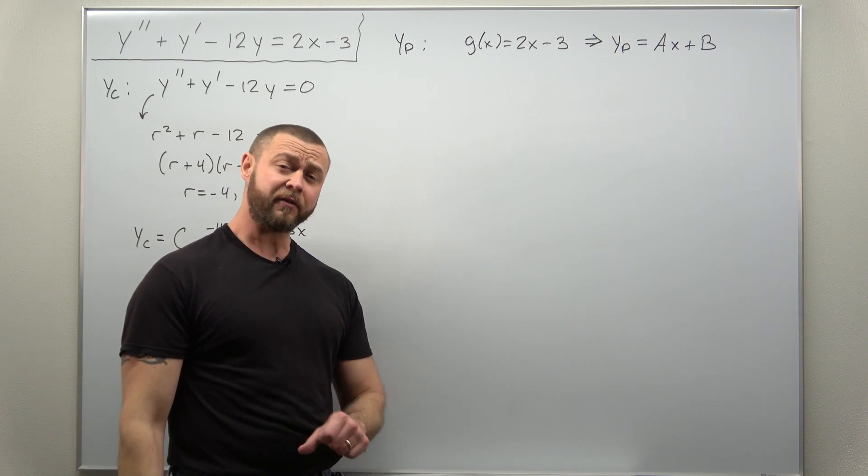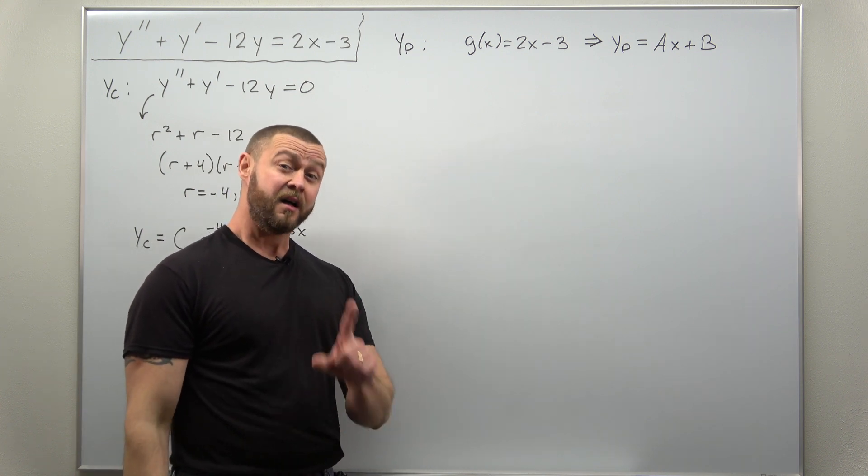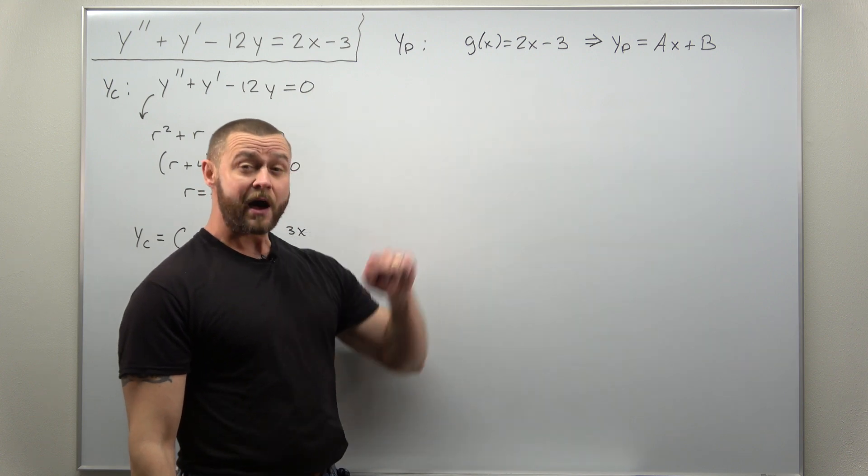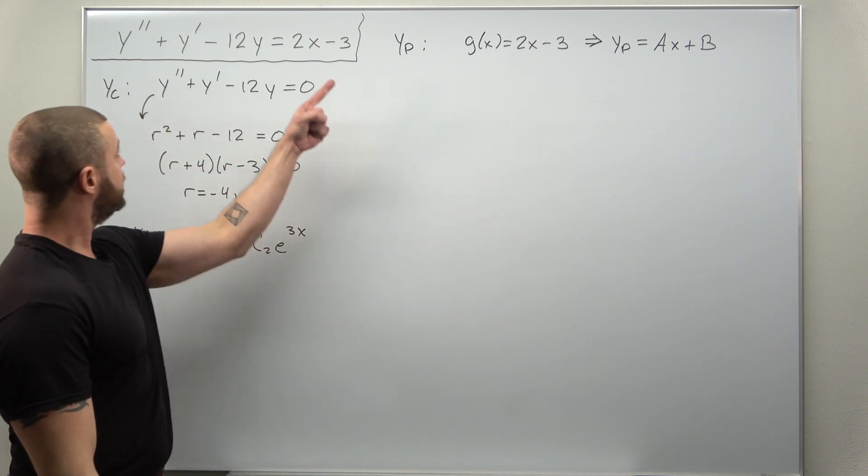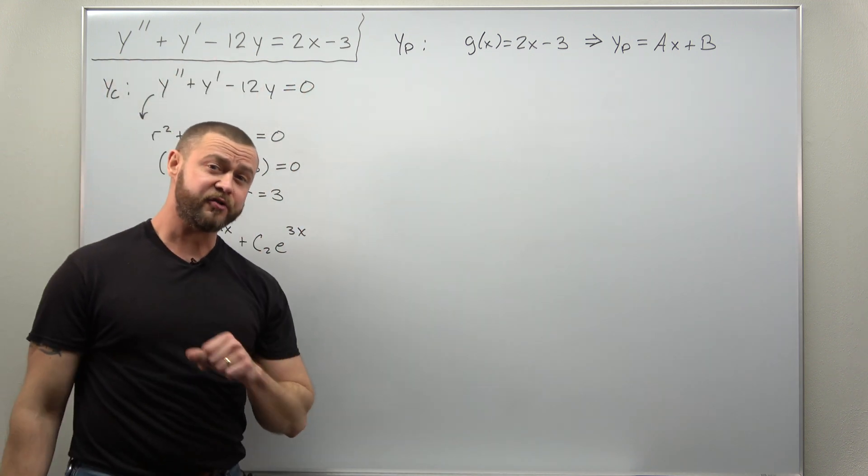Now we try to solve for the values of a and b by plugging that form for yp back into our differential equation.